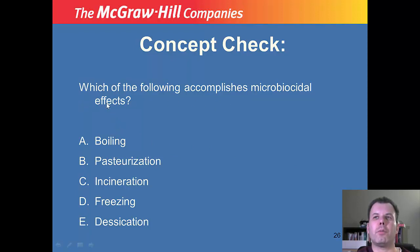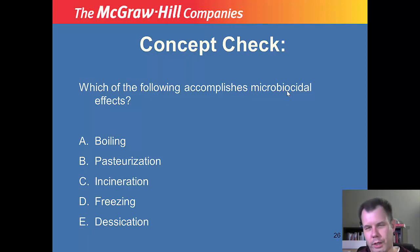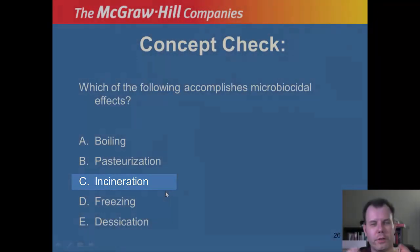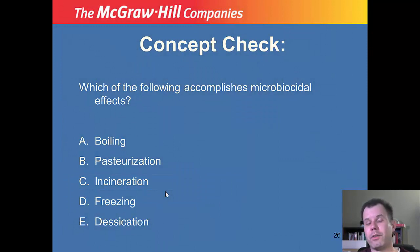Concept check: which of the following accomplishes microbicidal effects — actually kills bacteria? Is it boiling, pasteurization, incineration, freezing, or desiccation? And really let's say sterilization in this case — which one eliminates everything? If you said C, incineration, you got it right. Incineration, which is what we use on our bench tops, effectively kills everything — kills the vegetative, the moderate, and the endospores. Good job if you got it right.